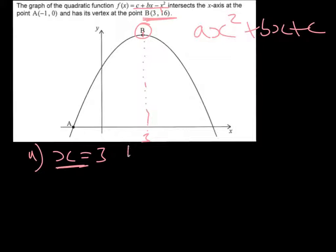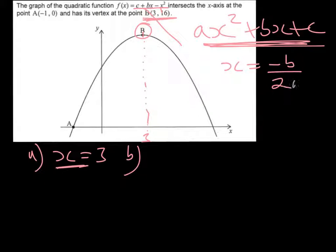Part b is a little bit harder. You're asked to find the value of b, this value up here, the coefficient of x. If we have a standard quadratic here, the formula for the axis of symmetry is x = -b/(2a).